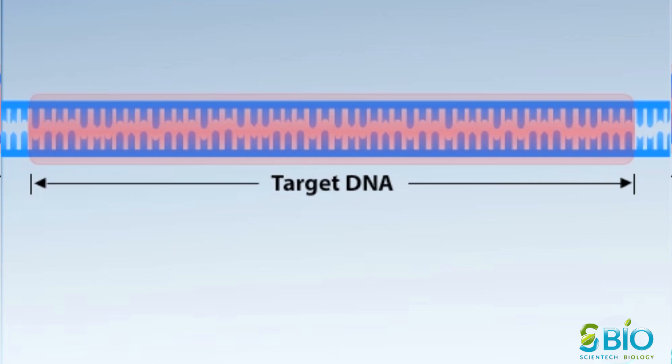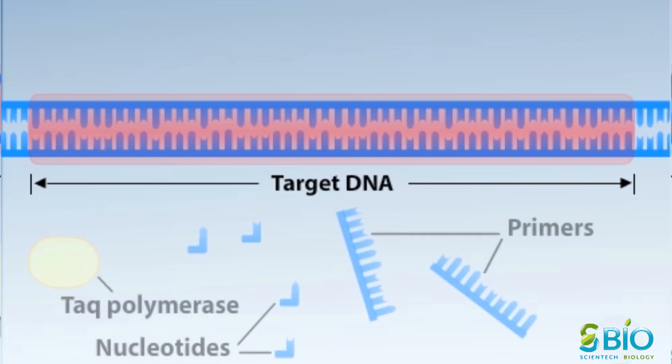In addition to the target DNA, a PCR reaction contains several other ingredients. These include free nucleotides, DNA primers, and enzyme Taq polymerase. The primers are typically above 20 nucleotides long and are complementary in sequence to the ends of the target DNA. Taq polymerase is derived from hot spring bacteria and can tolerate the intense heat of a PCR reaction.